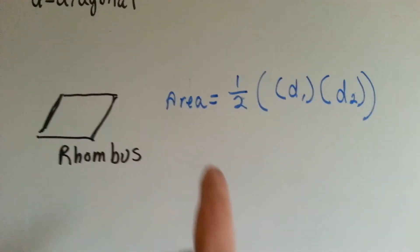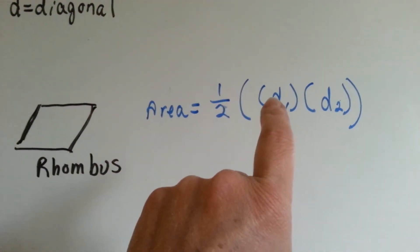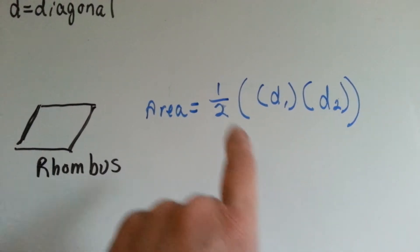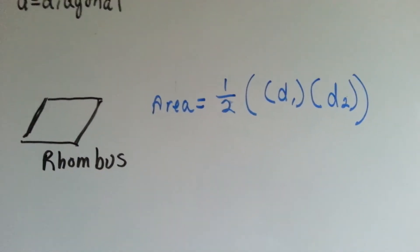For a rhombus, the area is diagonal 1 times diagonal 2 times half.